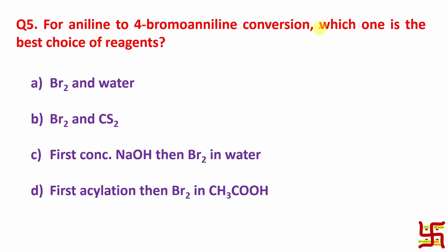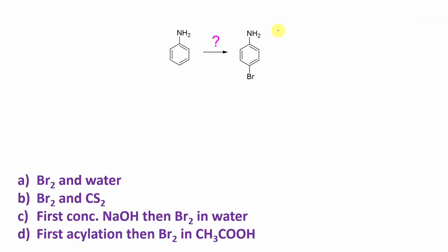Question is: for aniline to 4-bromoaniline conversion, which one is best choice of reagent? By the way, when you read a question, you need to understand what type of conversion it is. In this case, it is aromatic electrophilic substitution reaction and bromine is actually substituting one proton from aromatic nucleus. So here four options are given for reagent. So first let's look at the reaction. This is NH2 and this is 4-bromoaniline. What reagent is needed?